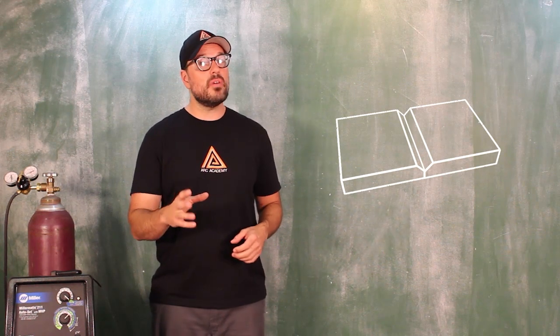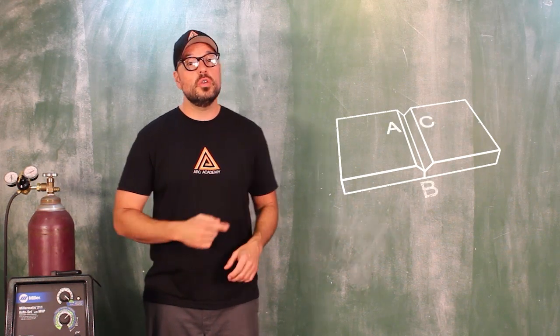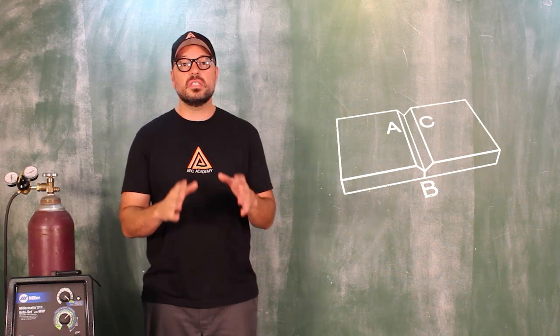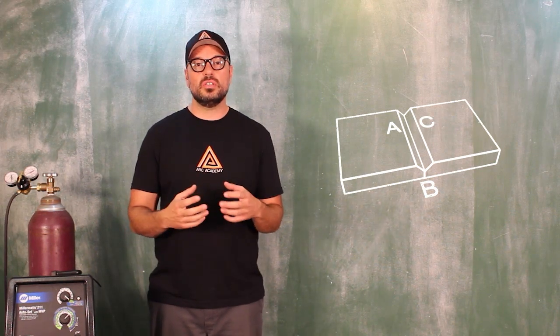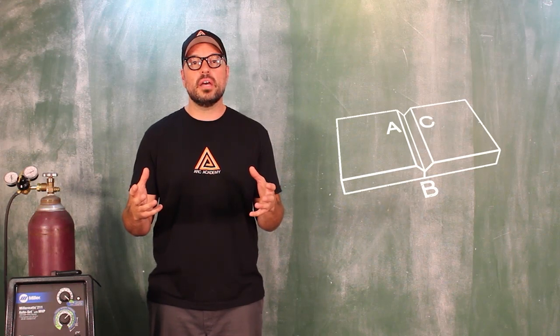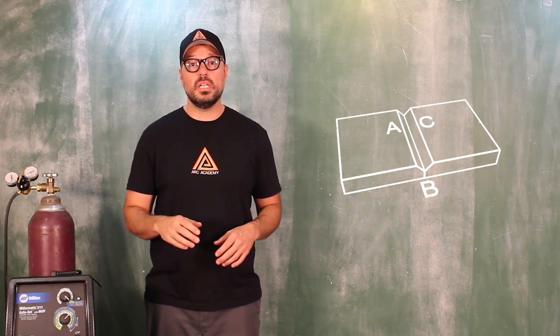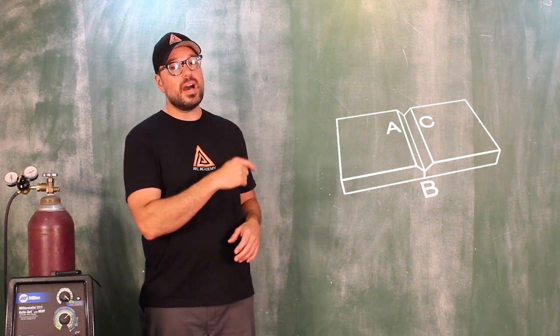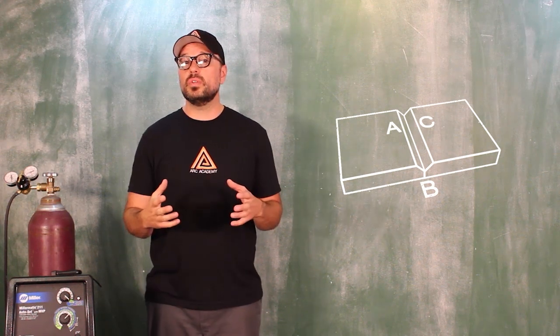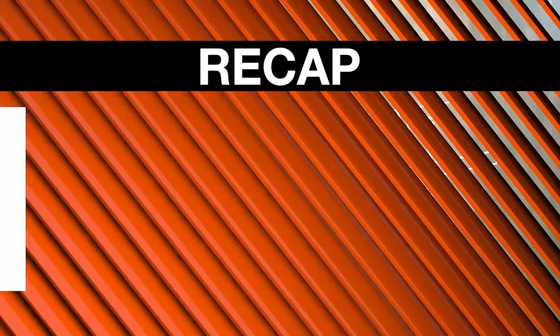Now the greatest thing about V chamfered butt joints is you have these three very distinct lines to follow as you are welding, just like lined paper when you're learning how to write. The A and C edges are the completed surface that you're creating, and then B is the very bottom of your channel, what I like to refer to as the beeline or the butted surface.